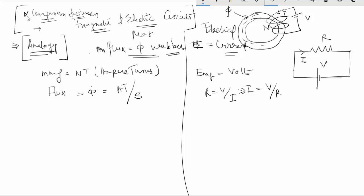And the flux density B is given by Weber per meter square or B by A, which is very similar to the current density J which is given by I by A. The unit is ampere per meter square.